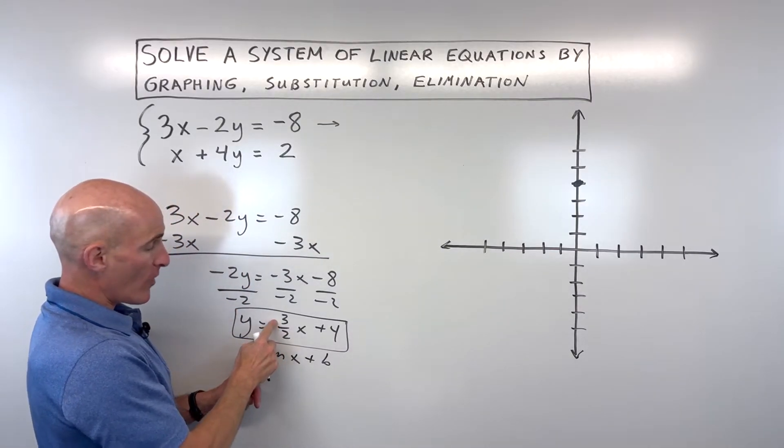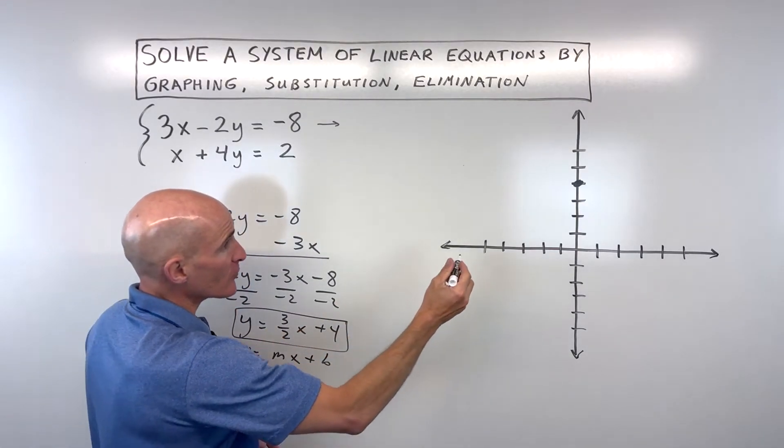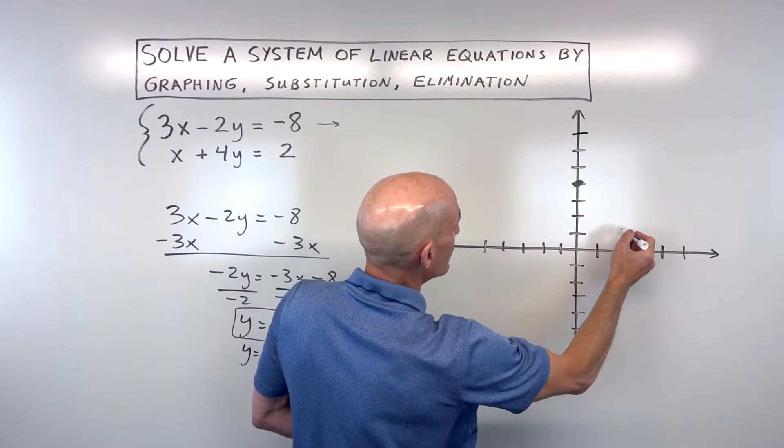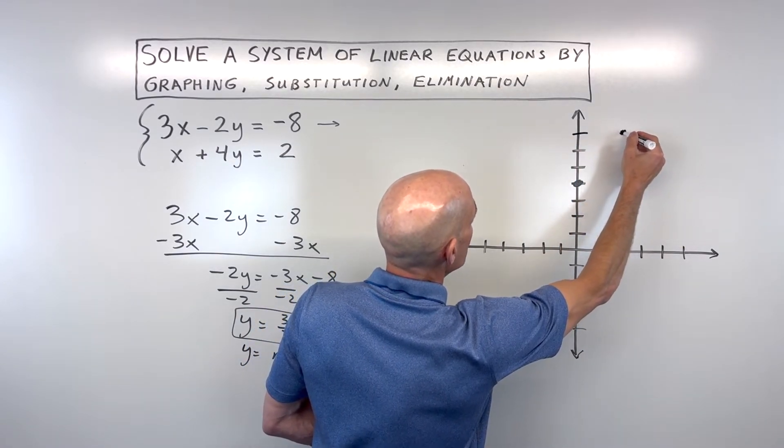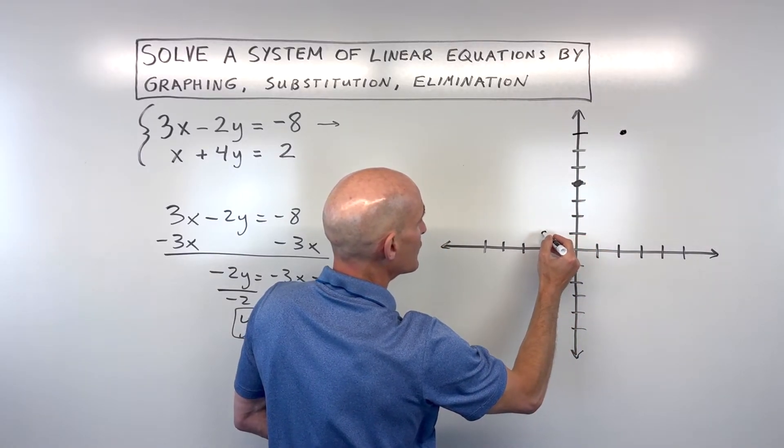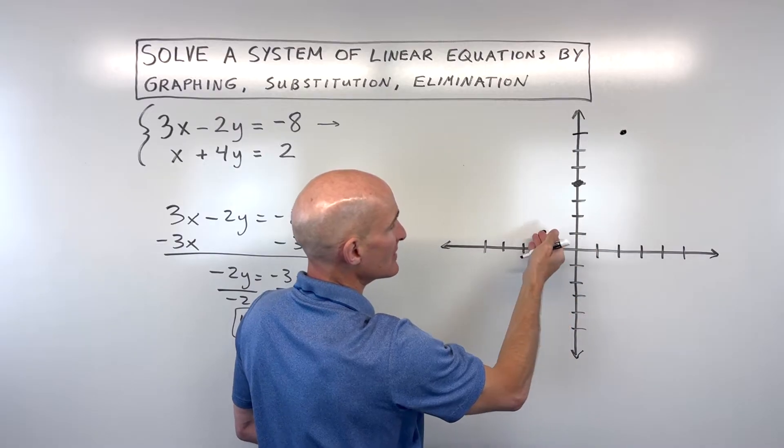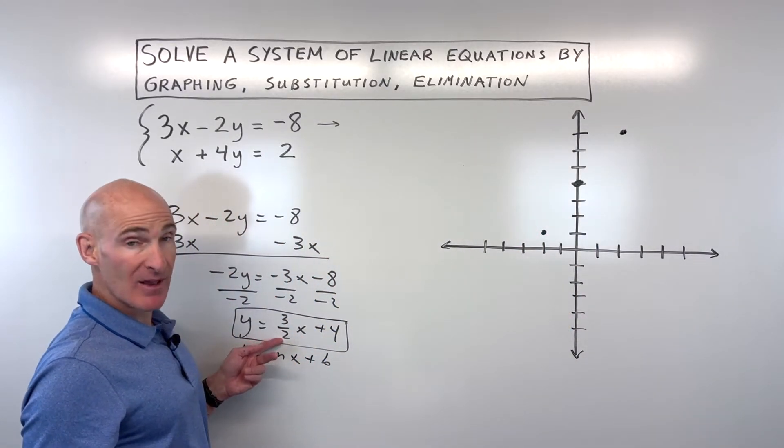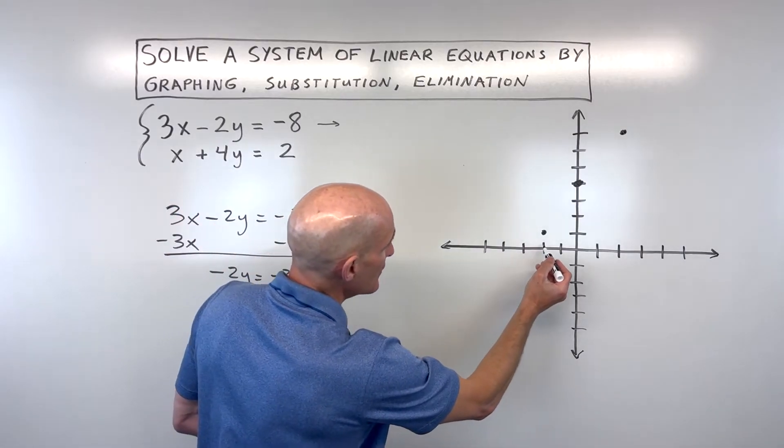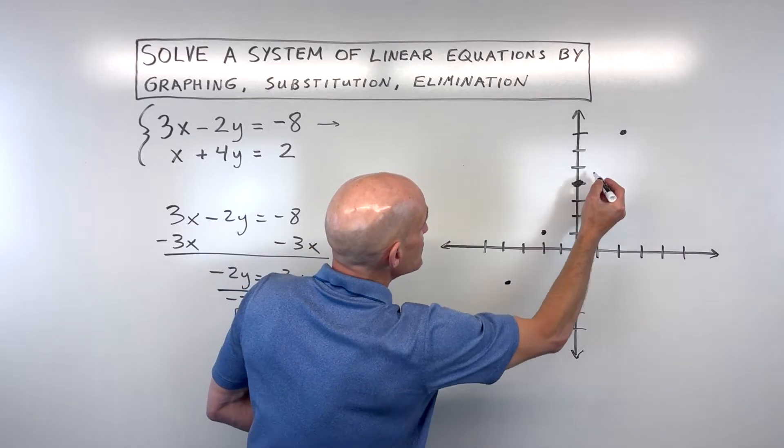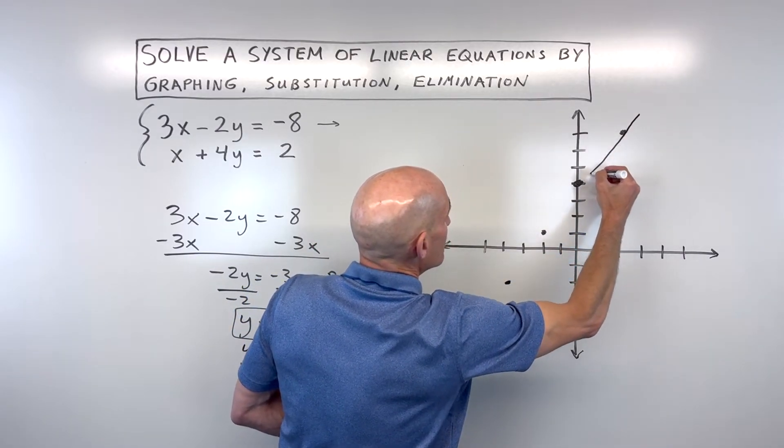And then our slope, rise 3, run 2. So from this point, I could go rise 3 and run 2, right about there. Or I could go negative 3 and negative 2, because down 3, down 2, that's both negative. A negative divided by negative is a positive, which is still the same as positive 3 halves. So again, down 3 and left 2. And so that gives us that first line there.